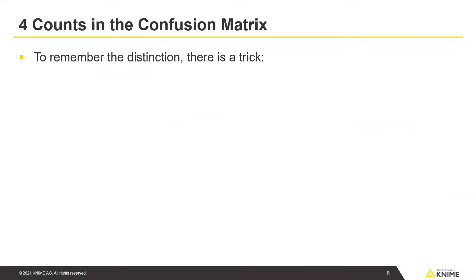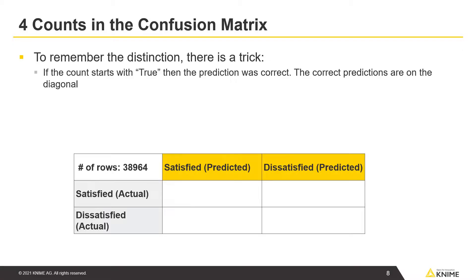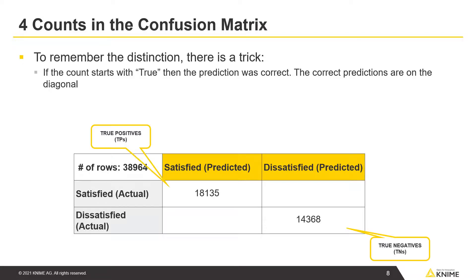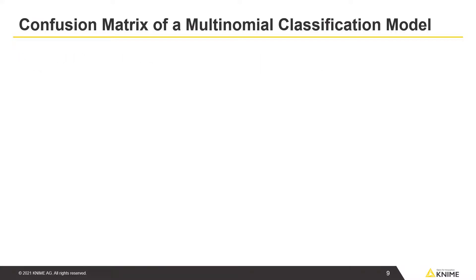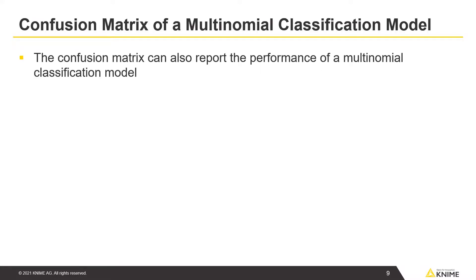To remember the distinction, there is a trick. If the count starts with true, then the prediction was correct — the correct predictions are on the diagonal. If the count starts with false, then the prediction was incorrect — the incorrect predictions are on the anti-diagonal. The confusion matrix can also report the performance of a multinomial classification model.